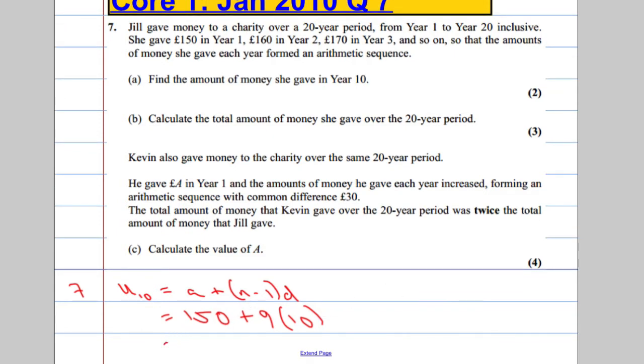Which is the common difference. And the common difference from year to year is 10. So, 150 plus 90 is going to be 240, and let's remember to put in the pound sign.